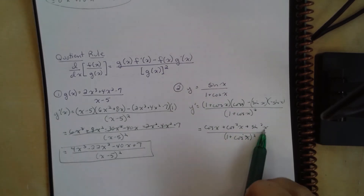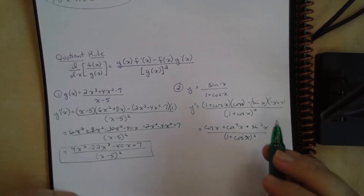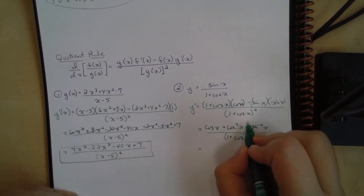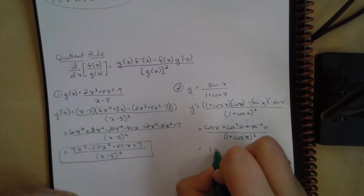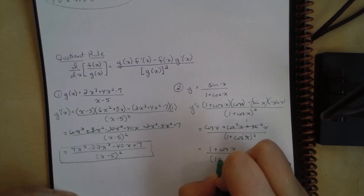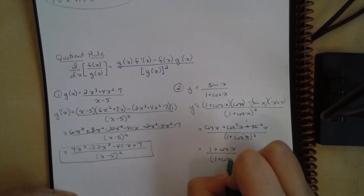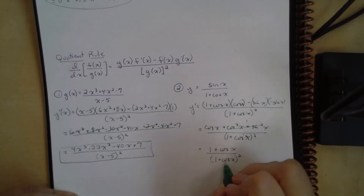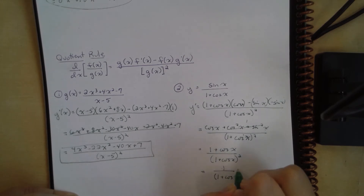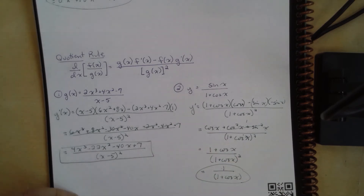So cosine squared x plus sine squared x equals 1 from our trig identities. Now we have 1 plus cosine x over 1 plus cosine x squared, which simplifies further to just 1 over 1 plus cosine x. And that's our derivative.